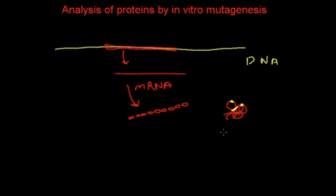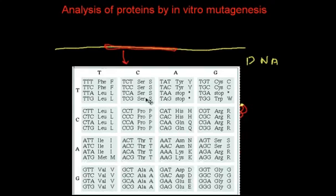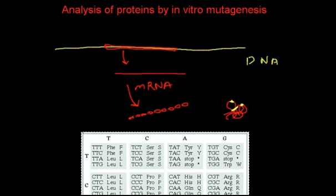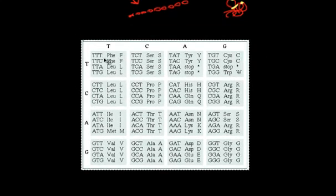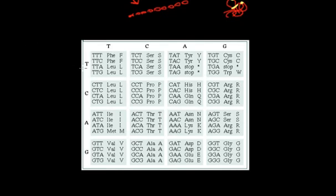This is, of course, an oversimplified representation. When I am talking about mutations, I want to highlight that not all changes in DNA may lead to changes in protein sequence. For example, take leucine — it can be coded by four different sequences: CTT, CTC, CTA, and CTG. We see that the first two letters are all the same — CT — and only the last letter is changing.